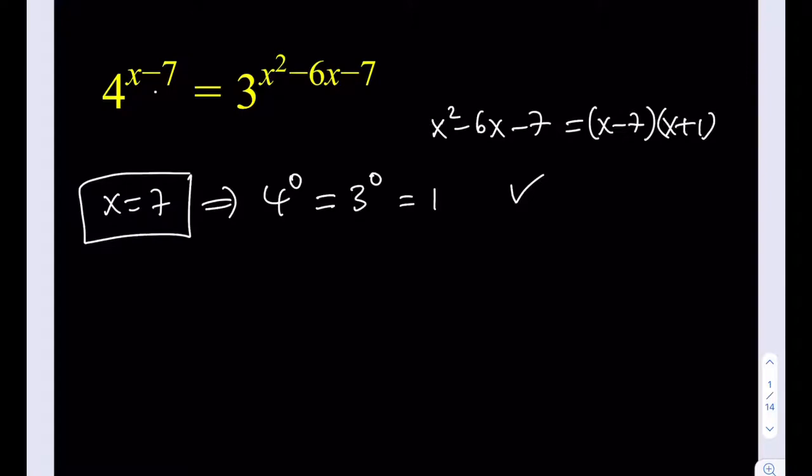Alright, so what are we supposed to do here? Well, we do have two bases here that are different, and obviously 4 is not a power of 3, so they have no common powers. So what we're going to do here is we're going to take the logarithm of both sides. But which base do we need to choose?